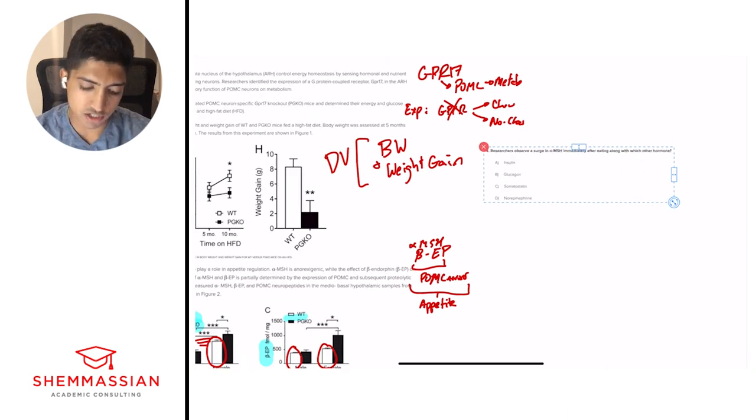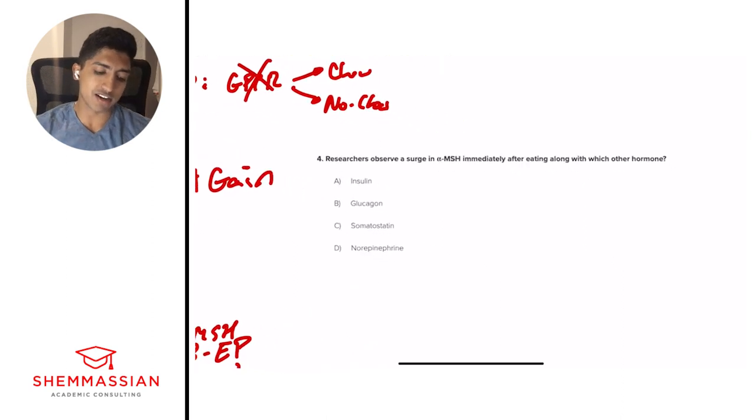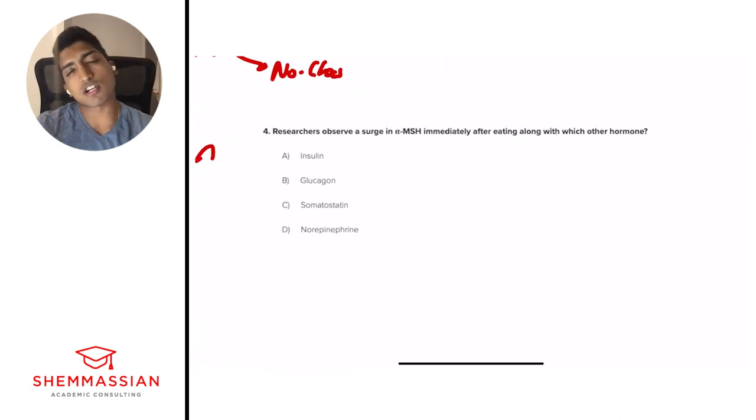On to question number four. Researchers observe a surge in alpha MSH immediately after eating along with which other hormone? A. Insulin, B. Glucagon, C. Somatostatin, or D. Norepinephrine. All right, another standalone question. So we don't have to look back into the passage, which we just have to understand what hormones are going to occur when. And this is a very high yield topic on the MCAT, understanding hormones. So when you eat food, what is going to happen? We're going to have a sudden increase in insulin because we have energy available. We have food available to turn into this metabolic cycle, to turn into ATP long-term.